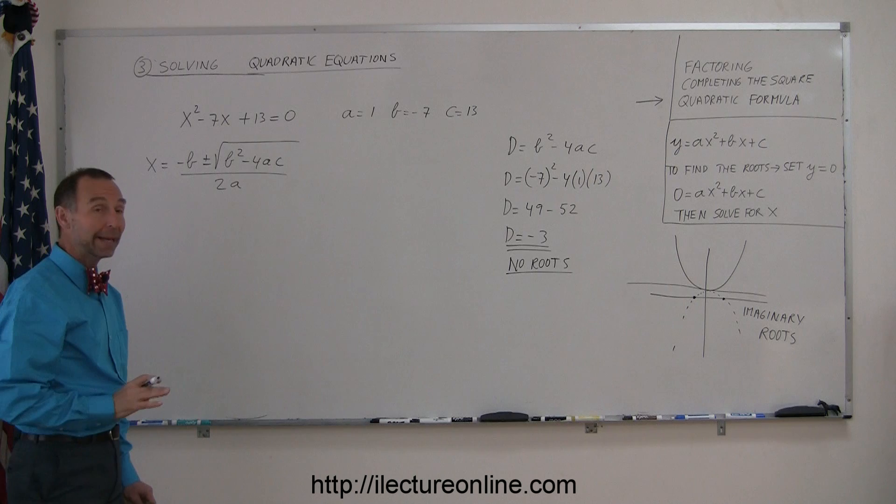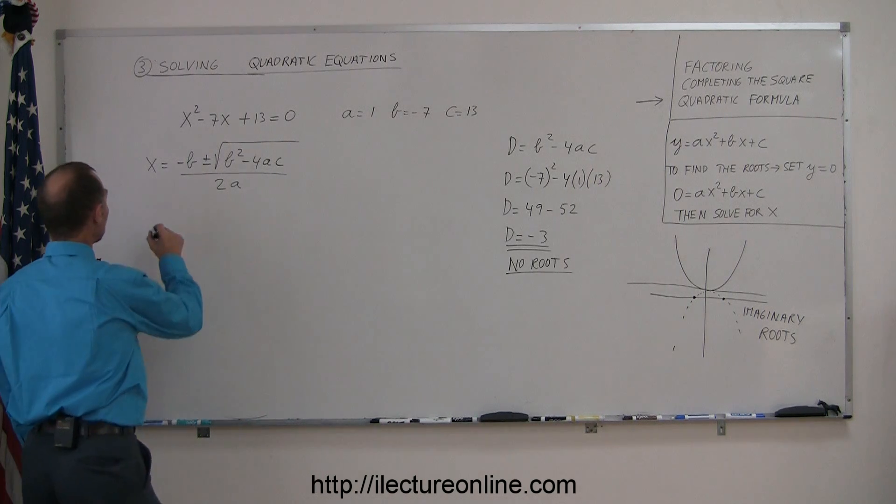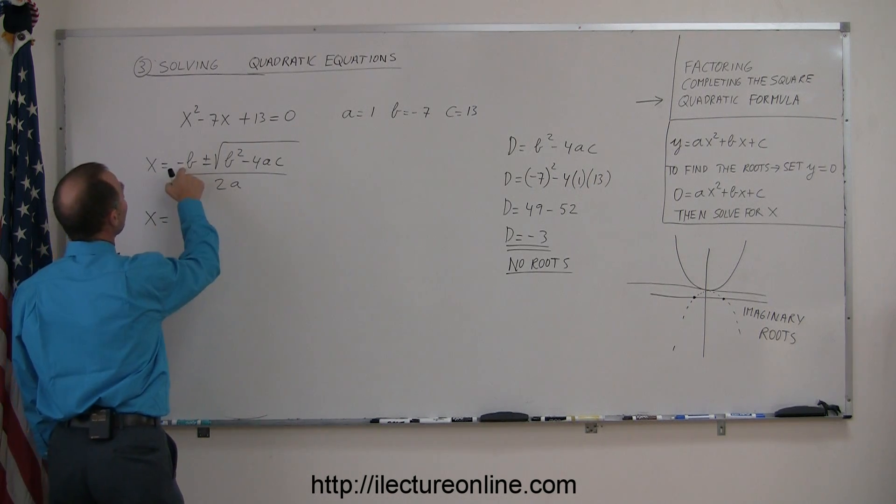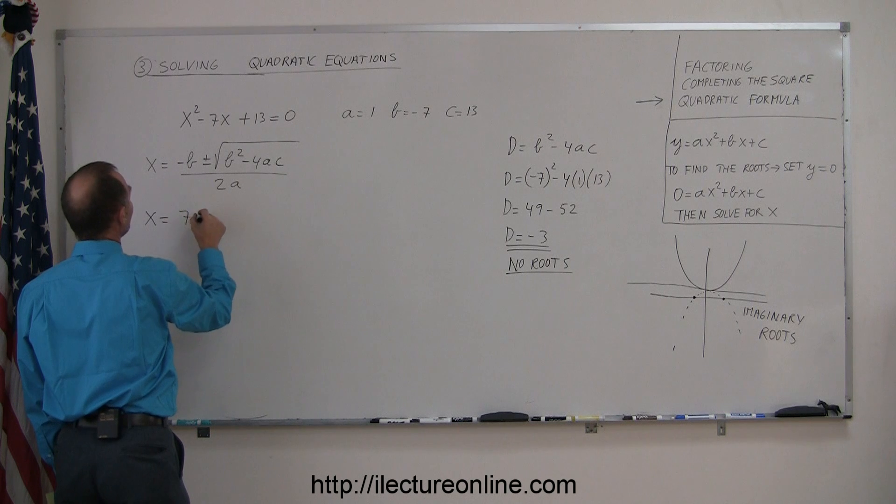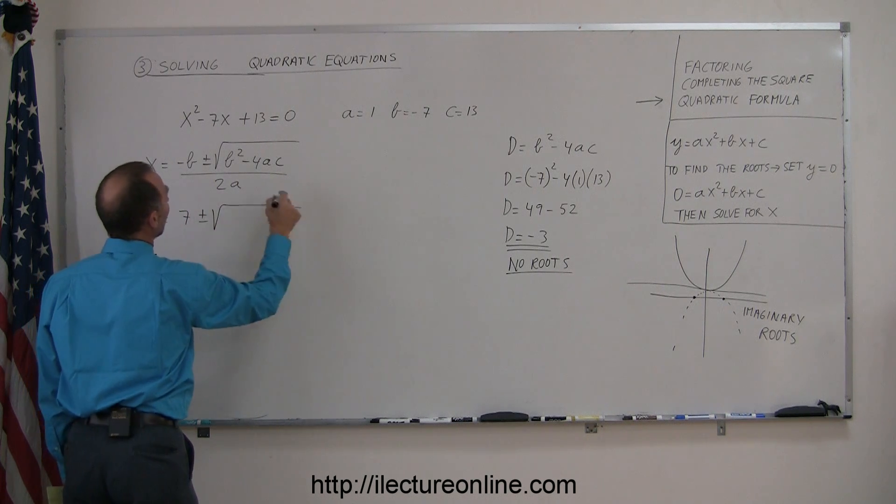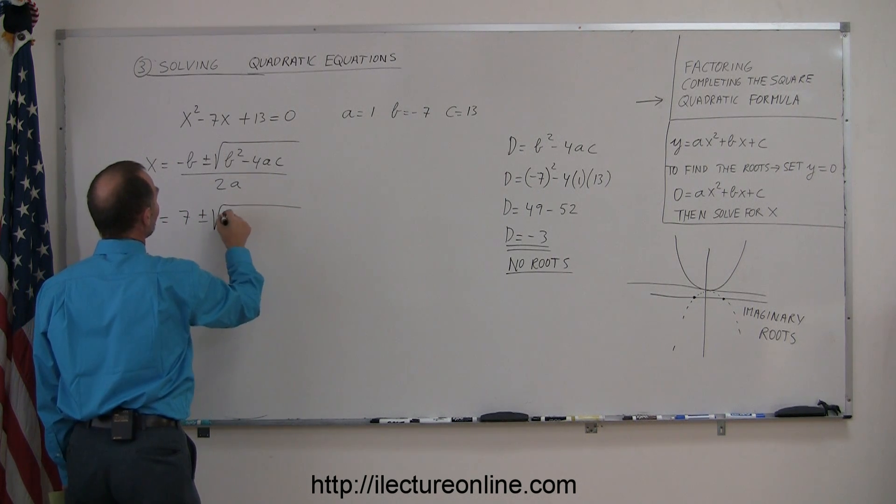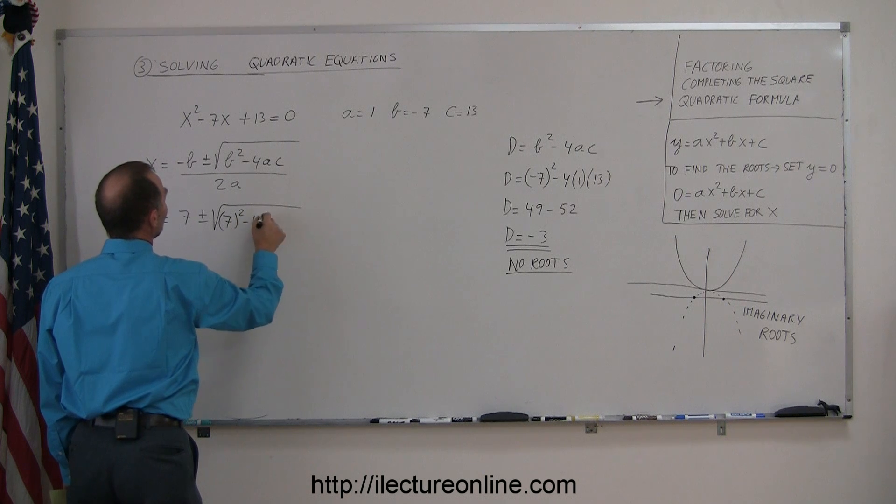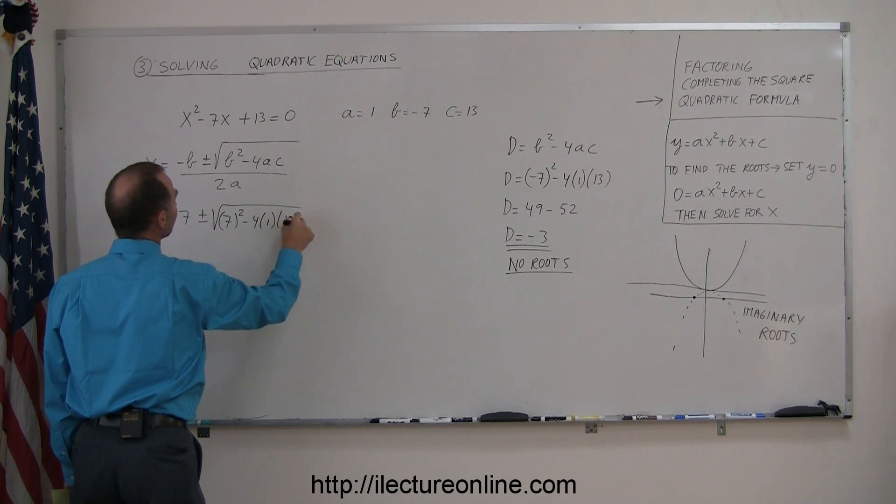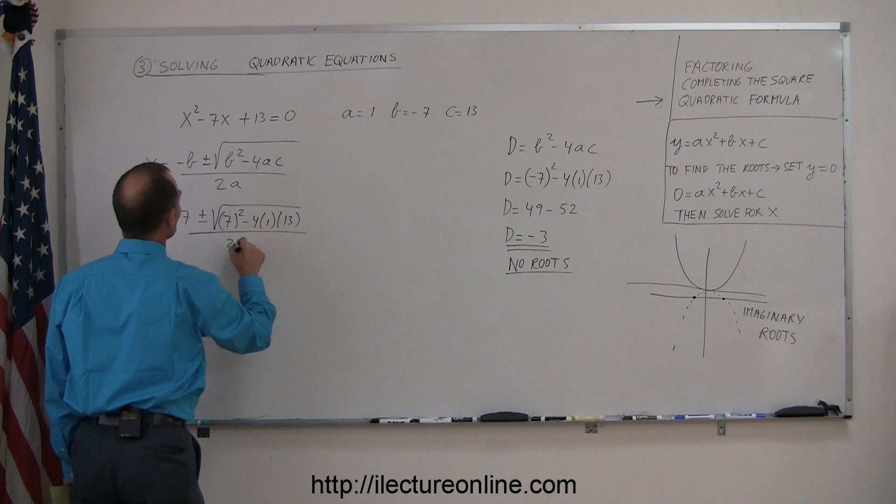But nevertheless, let's go ahead and solve this equation. So x is equal to minus b, which is a positive 7 plus or minus the square root of b squared, which is 7 squared minus 4 times a times c, all divided by 2a, which is 2 times 1.